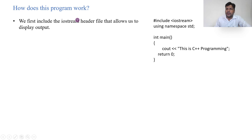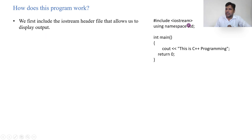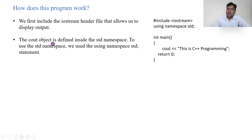How does this program work? The basic thing is: first, include the iostream header file, which allows us to display output. iostream stands for input/output stream. It is a must. If you are writing in Turbo C++, you write iostream.h; if in Dev C++, you write iostream.